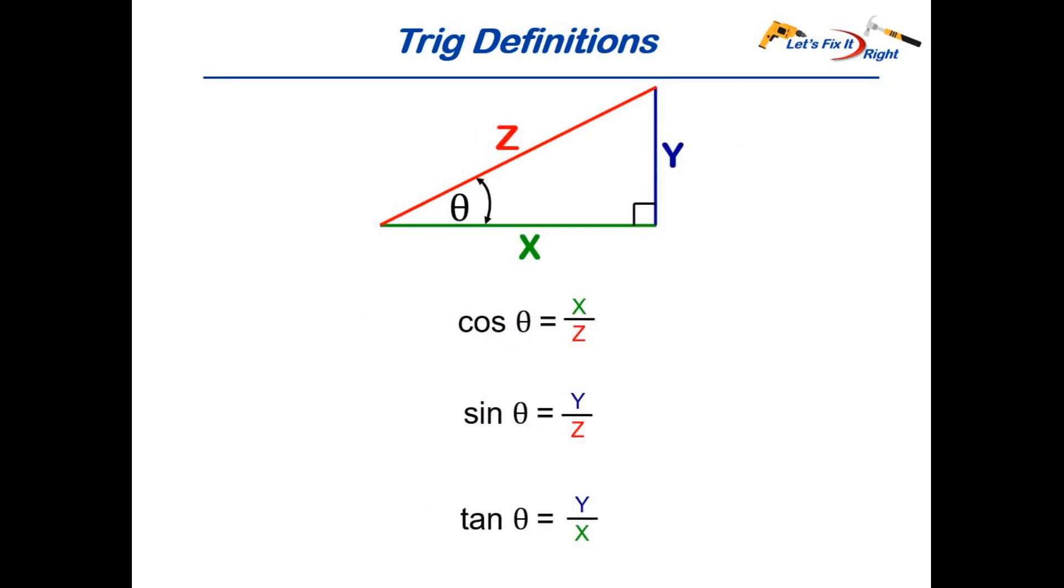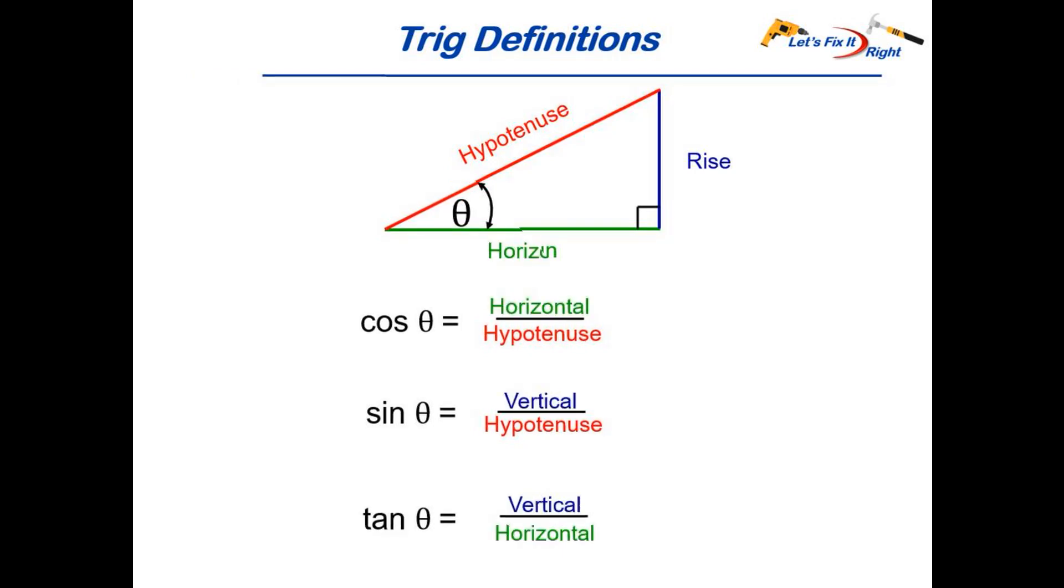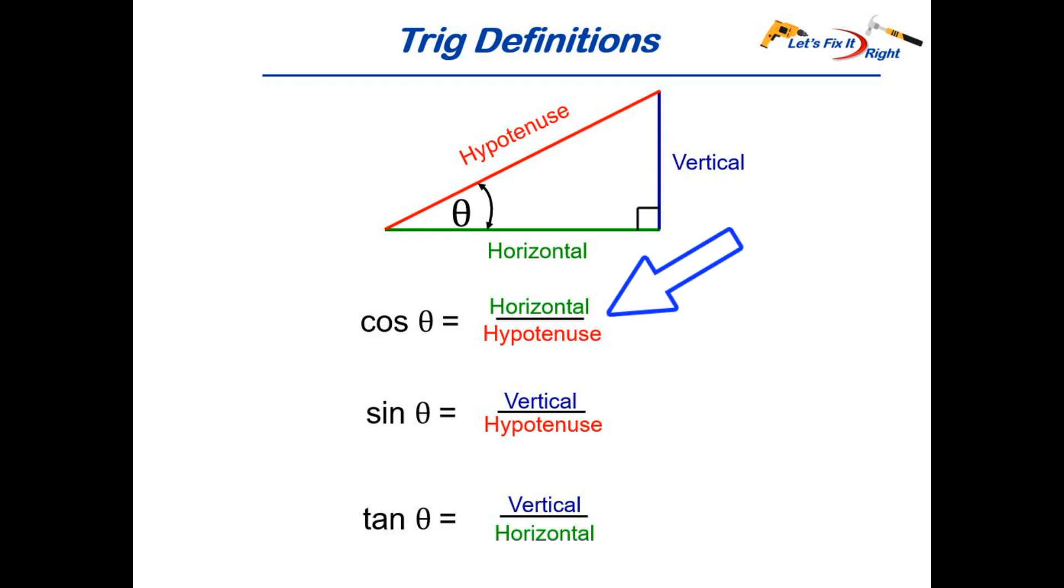You'll also see these three triangular sides expressed as X Y and Z as shown here and sometimes you'll see the opposite side called the rise and the adjacent side called the run. To make this easy to understand I always think of cosine as being an expression or ratio of horizontal distance and the sine as being an expression of vertical distance.